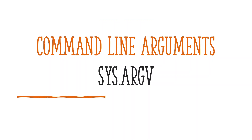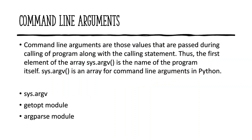Welcome to my channel. In this Python beginner tutorial series, today let's discuss how to pass command line arguments in Python. There are mainly three ways: one is using sys.argv, second is using the getopt module, and third is using the argparse module.